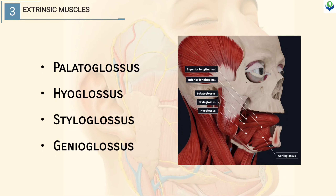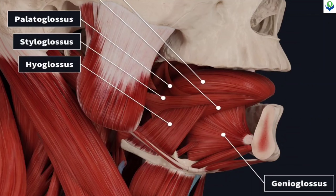The extrinsic muscles of the tongue are palatoglossus, hyoglossus, styloglossus and genioglossus. Here is a closer view of all the extrinsic muscles of the tongue.